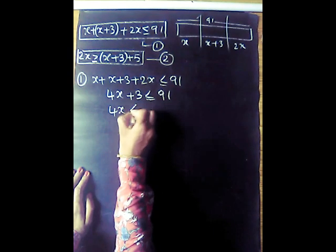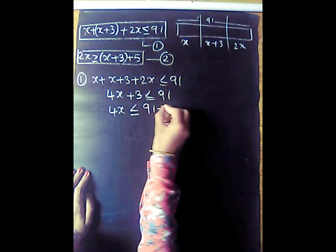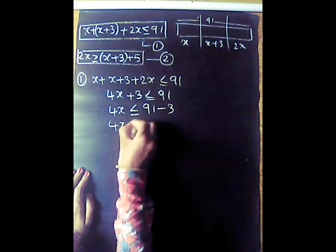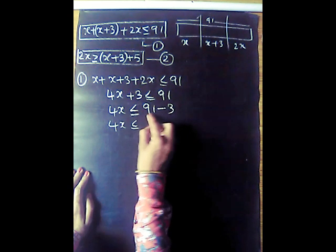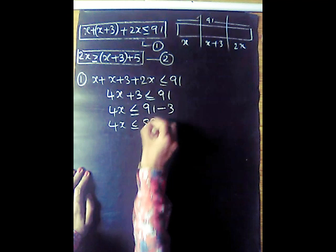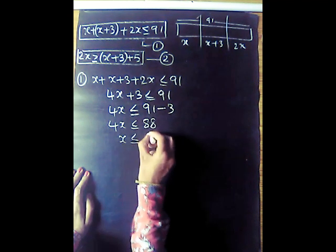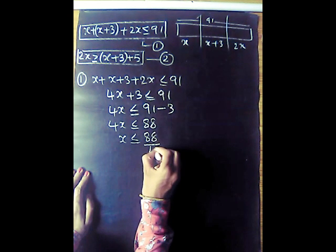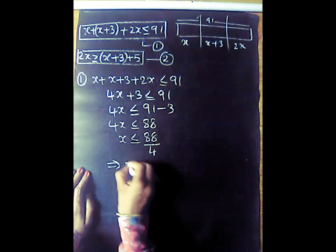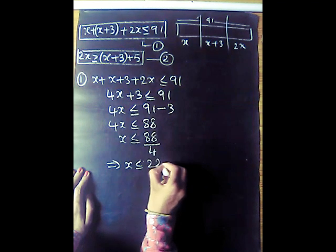So 4x is less than or equal to 91 minus 3, which is 88. Therefore x is less than or equal to 88 divided by 4, which implies x is less than or equal to 22.